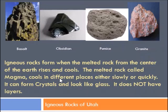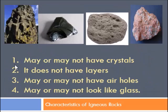Igneous rocks are either going to be cooling very quickly or slowly, and that will determine how the crystals form. They can have visible crystals, like granite — if you look at a piece of granite, you can see the crystals and the different colors in it. Or it might not form any crystals and might look like glass. One important thing to note: igneous rocks usually do not have layers. They may or may not have crystals that you can see, and they do not have layers, typically.